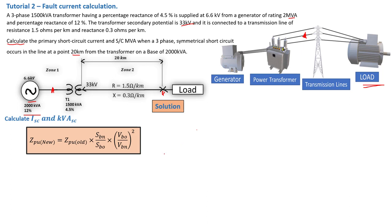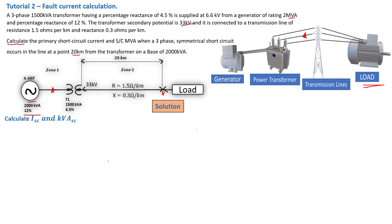Using the general per unit formula, we find the per unit of the generator (Z1) to be 0.12 per unit. For the transformer (Z2), we found a per unit value of j0.06 per unit. We can now move on to calculate the per unit for the cable.